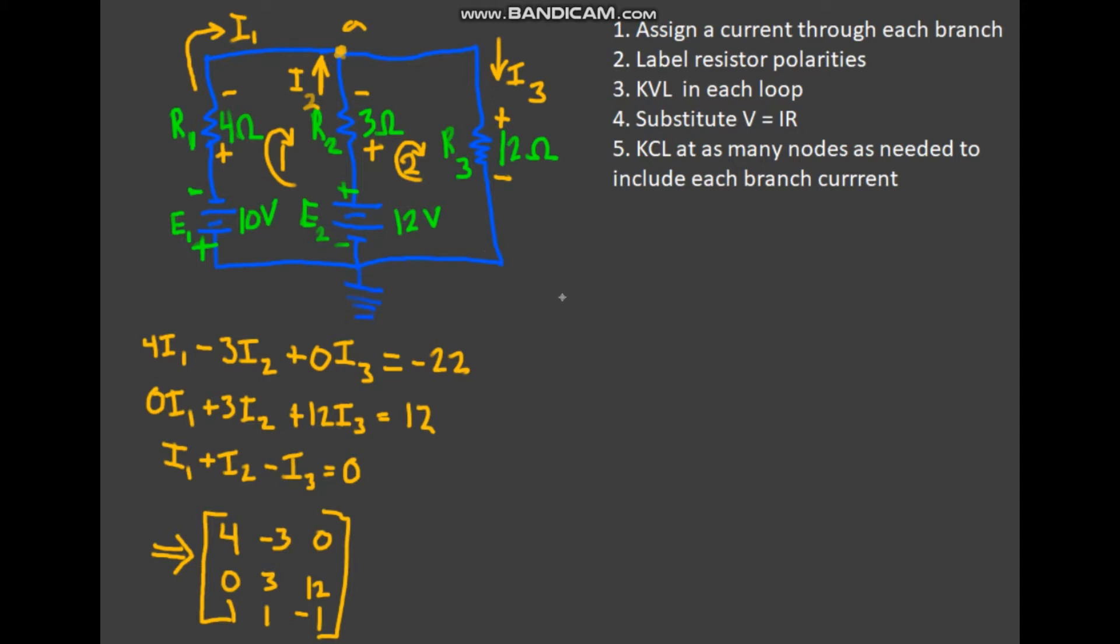So now what we're going to do is we're going to take some determinants and we're going to use a technique to solve for the unknown currents. Essentially, it's just Cramer's rule from linear algebra. If you haven't done your linear algebra, that's okay. I'm going to show you how to do it, but essentially we're just taking determinants.